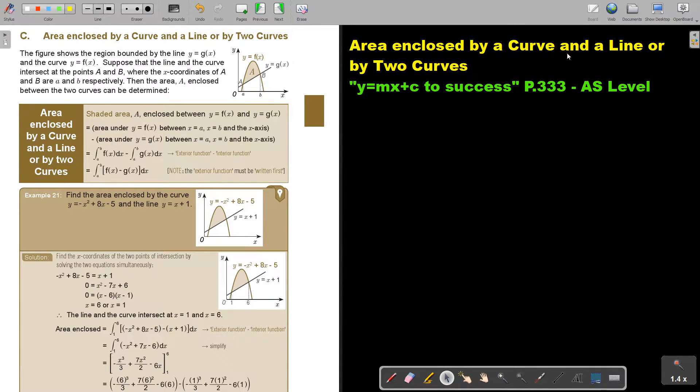Area enclosed by a curve and a line or by two curves. You will find this on page 333 in the Namibia AS Level Mathematics textbook Y equals MX plus C to success.